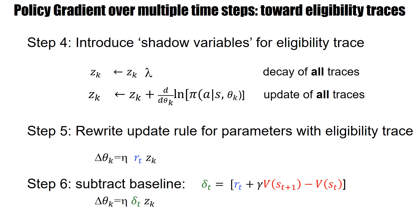We update eligibility traces proportional to the derivative of the log policy. These eligibility traces then decay, and finally we do the parameter update proportional to the momentary value of the eligibility traces. State-action pairs that are farther away have decayed more. This update is proportional to the rewards — in our case I highlighted the reward at time t+2.